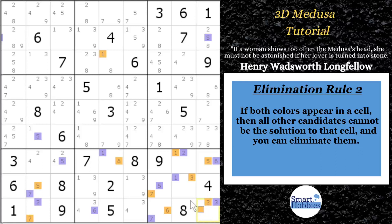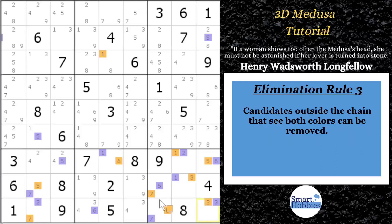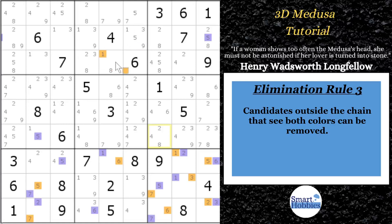Now the third elimination rule — similar to what I've shown in other coloring tutorials: if both colors share the same house, you can eliminate all other candidates in that house. With these two sevens, one of them has to be the correct solution — orange or purple. So it sees all the other sevens going up column seven, and you can eliminate those. Those are the three elimination rules.